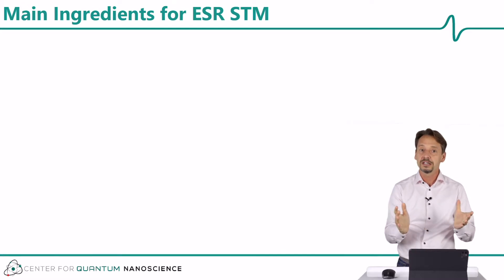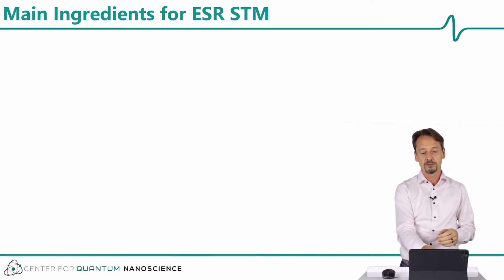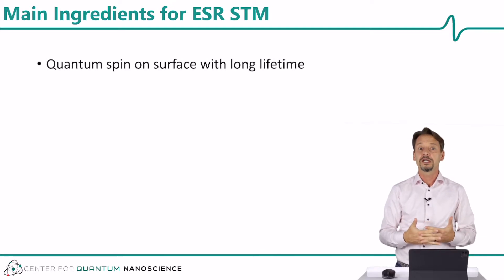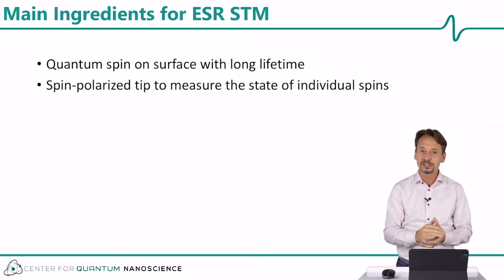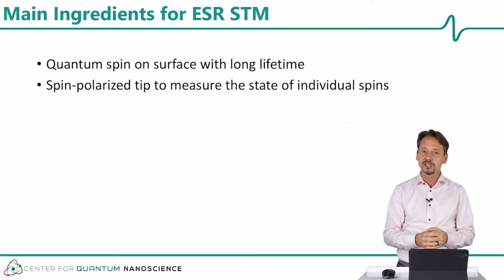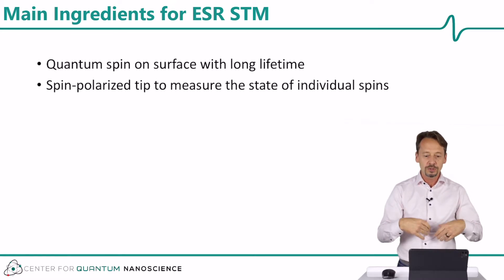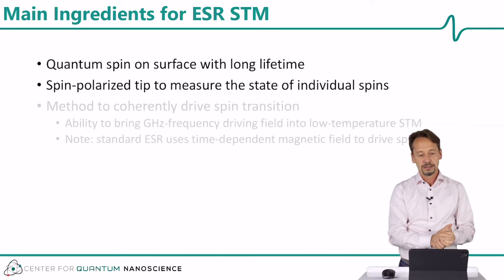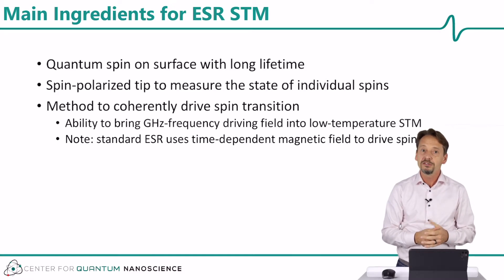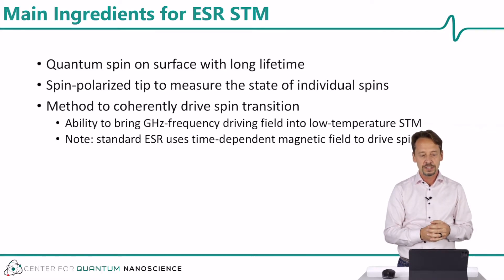This allows us to come up with the main ingredients we need for ESR-STM. We need quantum spins with long spin lifetimes. We need spin polarized tunneling available so that we can measure the spin state of an individual quantum spin. We need to be able to measure the spin state before it relaxes back to the ground state. And finally, and somehow most difficultly, we need a method to coherently drive these spins. This is the new aspect that we need to introduce for ESR-STM.